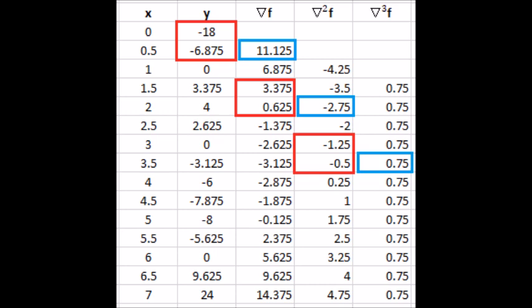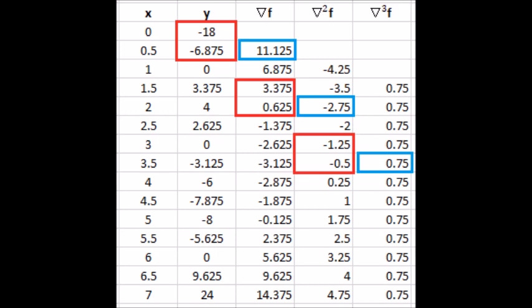That was a forward difference table. This is a backward difference table. Notice the numbers are the exact same and computed in a similar way. They are just shifted downward. We will use the forward difference table for the next equation.